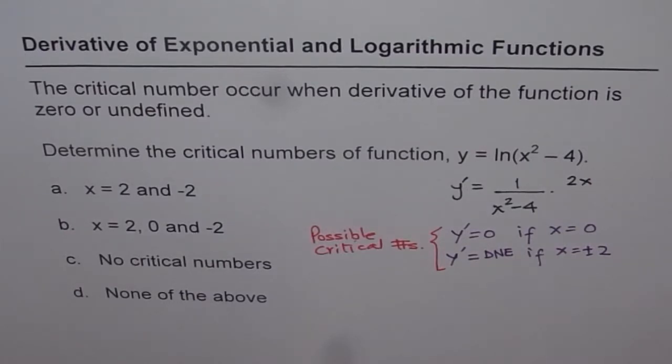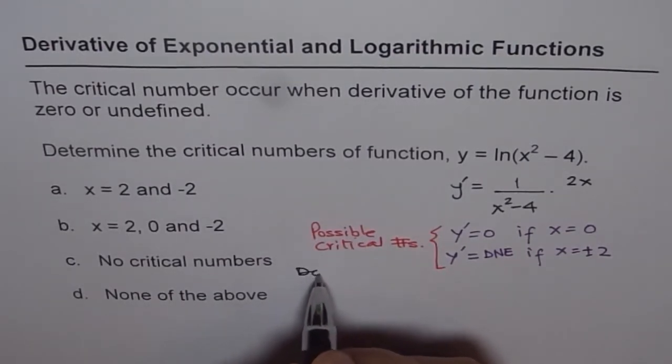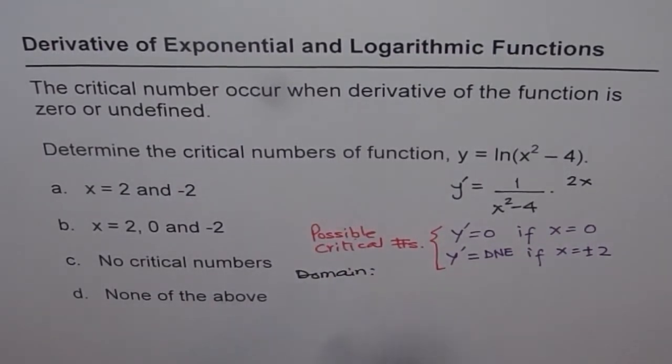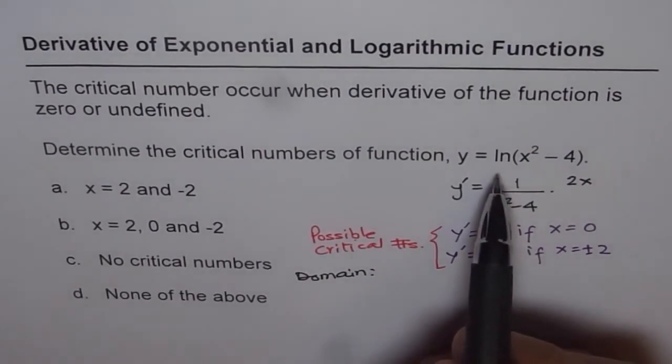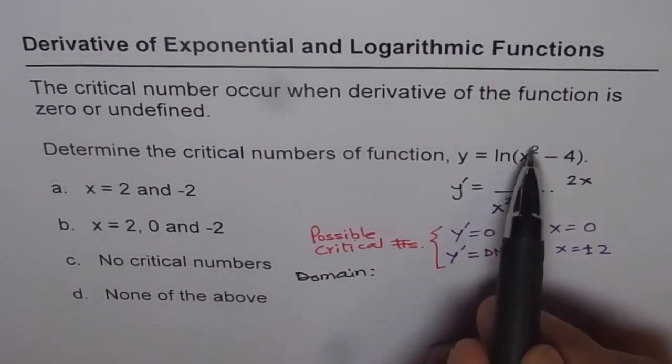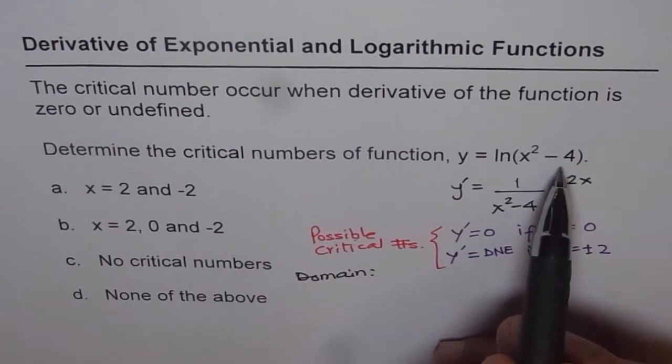To check that, we should find the domain of the function. That is more critical. For any logarithmic function, x² - 4 should be greater than 0.